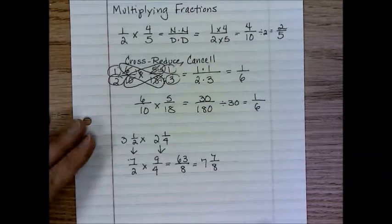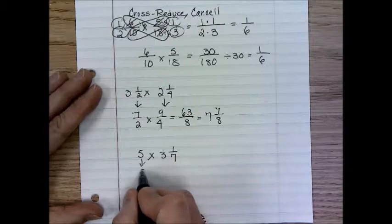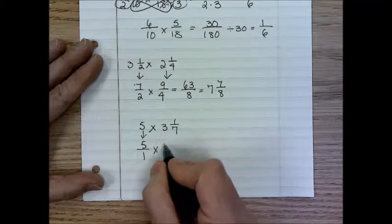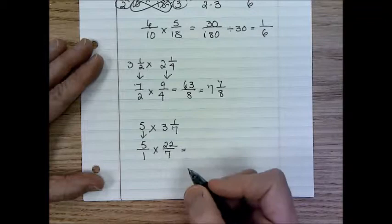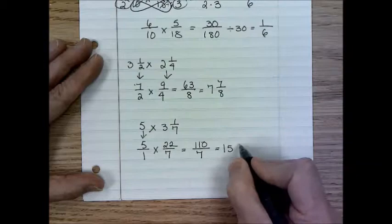All right. What if we had a whole number, for example, five times three-and-one-seventh? First, we want to rewrite our five as a fraction. So we would put that as five over one. And now we would change that to an improper fraction. And now we can multiply. So five times twenty-two is a hundred and ten. One times seven is seven. And one hundred and ten divided by seven would be fifteen with the remainder of five-sevenths.